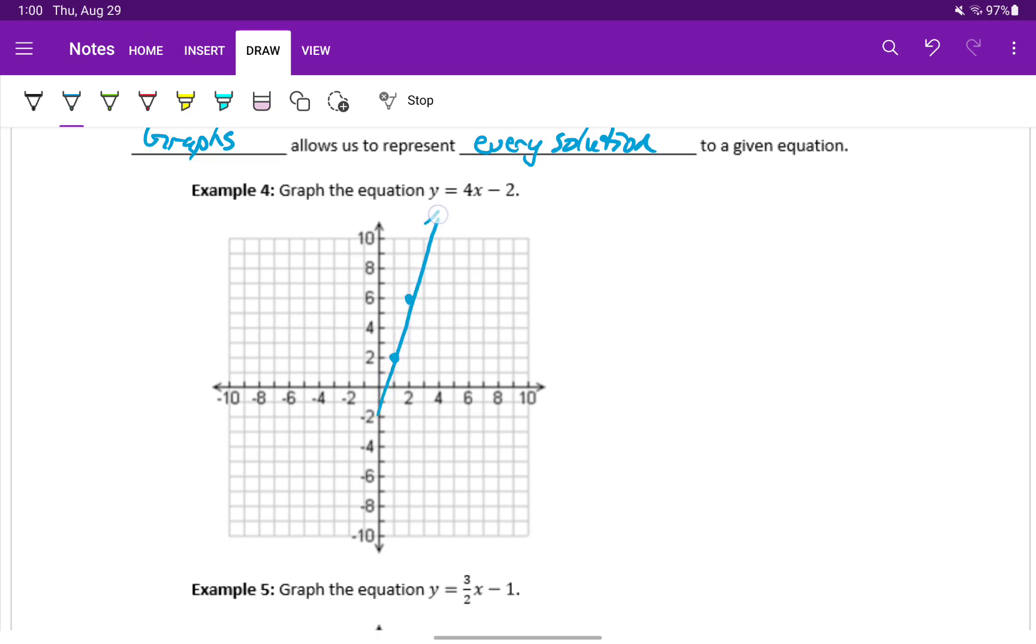All we need are 2 points to make a straight line. And if my line was drawn a little straighter, we'd have an even better representation. But that line represents every single x-y pair that is a solution to that equation.